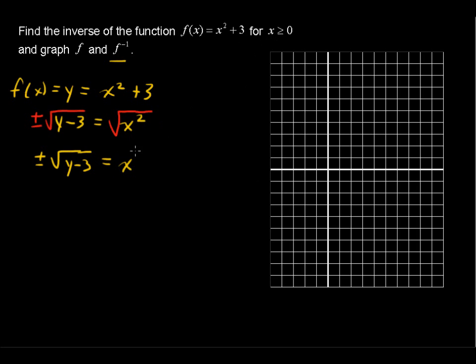So if this x has to be greater than or equal to 0, then this side has to be greater than or equal to 0, or non-negative. So I am going to get rid of this negative sign and just rewrite it one more time and say x equals the square root of y minus 3.